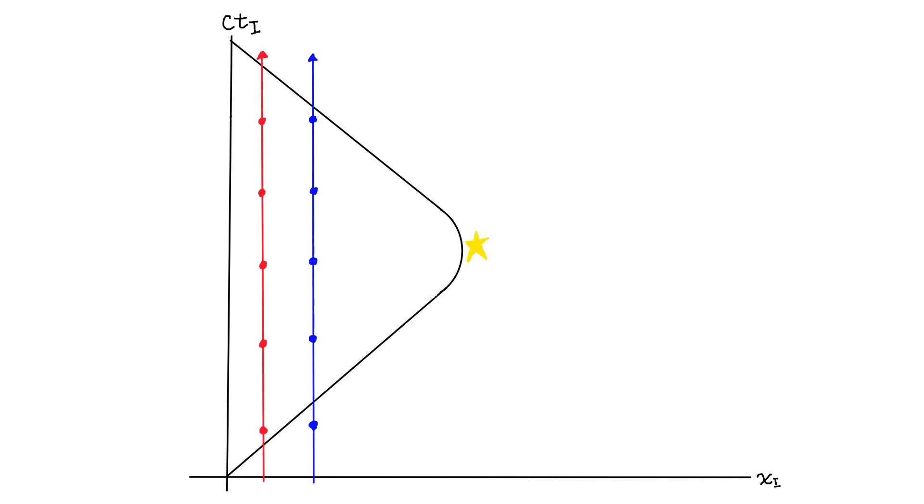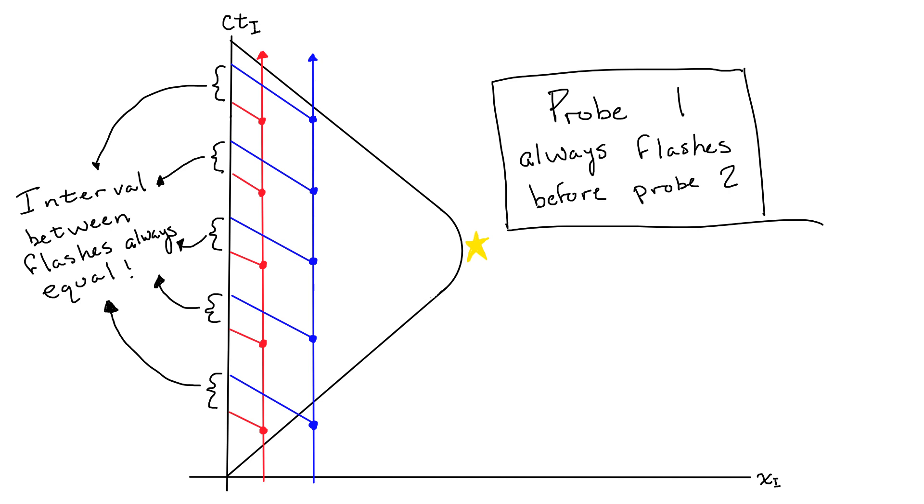Taking into account a speed of light delay, Isaac may see one light flash before the other, but the interval between the pulses and which probe flashes first will always be the same according to Isaac. Now, what about Albert?